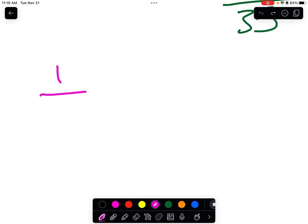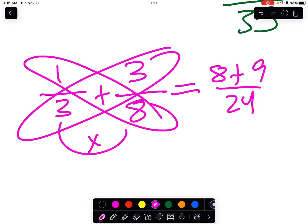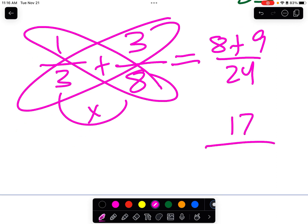Let's do 1 3rd. Oh, I didn't write that very good. 1 3rd plus 3 8ths using the butterfly method in pink. Okay. 3 times 8, that's 24. Crisscross, 8 times 1, that's 8. Crisscross, 3 times 3, that's 9. 8 plus 9, that's 17 over 24. 17 24ths, there's my answer.